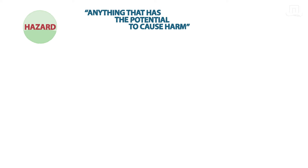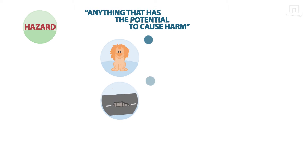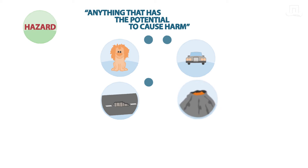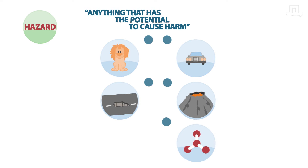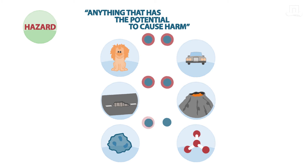This can, for example, be a dangerous animal such as a lion. It can be a hole in the street, a car, or a volcano. It can also be a toxic chemical in your food or a bacteria. Every day, you are surrounded by a large number of hazards.